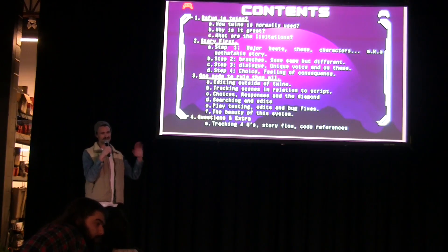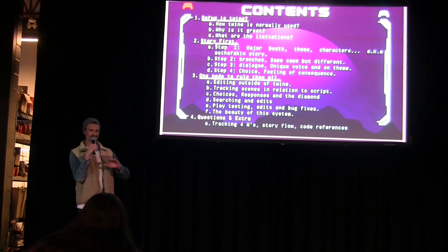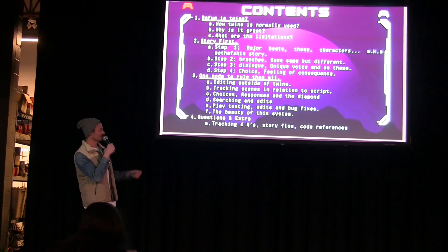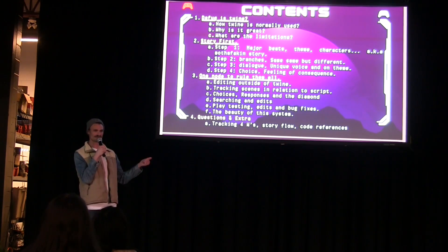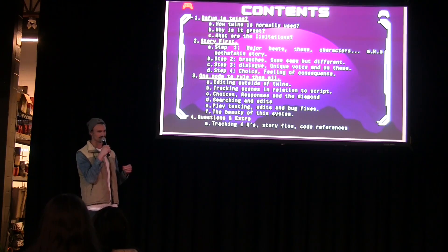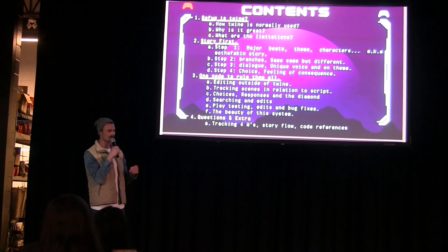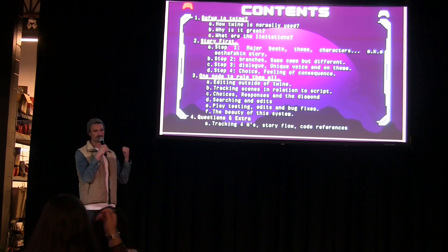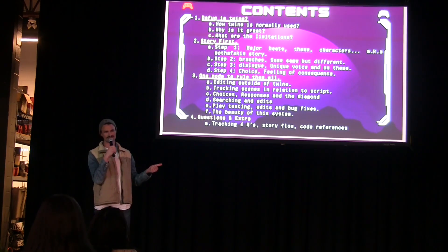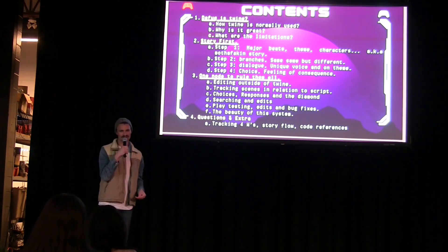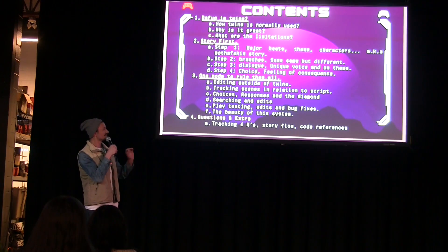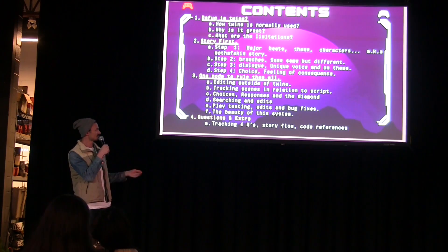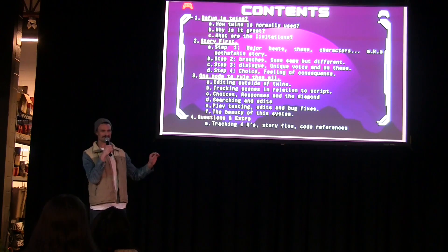First part, we're just going over what Twine is so everyone has a good overview of what we're actually talking about. Next, why it's great — honestly it's an awesome thing to use just for story. Then limitations, and then going to story. Your major beats first, then your branches, then your dialogue, then your choices, and then one node to rule them all.